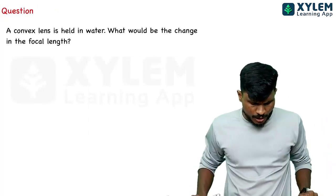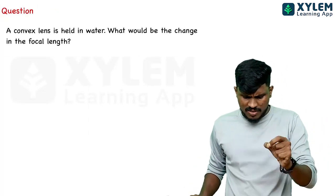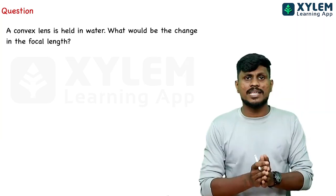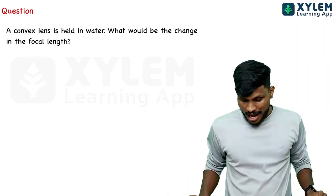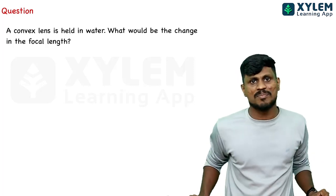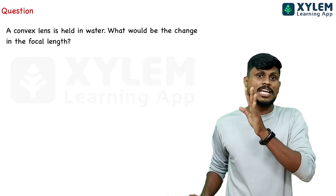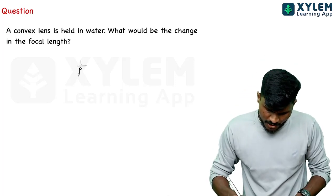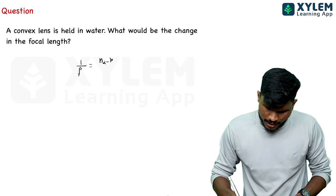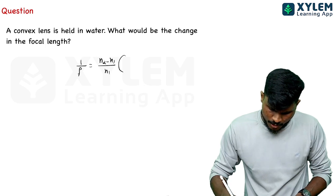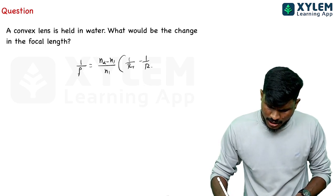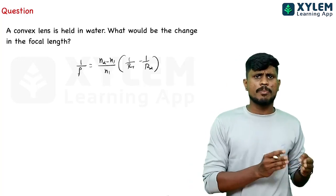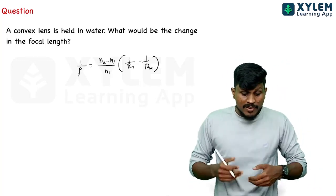A concave lens is held in water — what would be the change in focal length? This is important for convex lenses too. Using the lens maker's formula: 1/F equals N2 minus N1 divided by N1, into 1/R1 minus 1/R2.